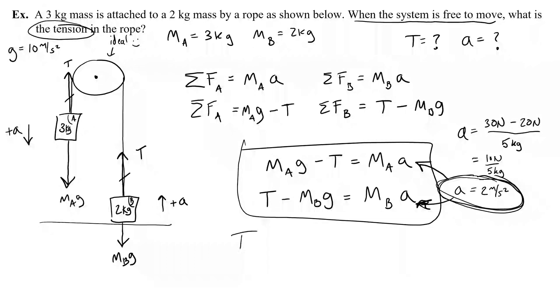T minus MB times G equals MB times A. And I'll solve it before I plug numbers in. So MB times the acceleration plus the weight MBG. So that's going to be the mass of B, 2 kilograms, times 2 meters per second squared, plus the mass of B, 2 kilograms, times G, 10 meters per second squared. So the tension is 4 newtons plus 20 newtons, which gives me a whopping 24 newtons of tension. So that is the tension that is acting on the Atwood's machine on either side.